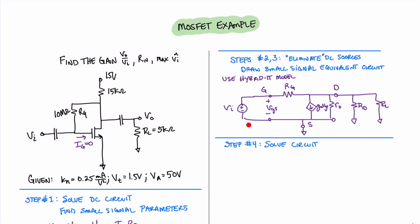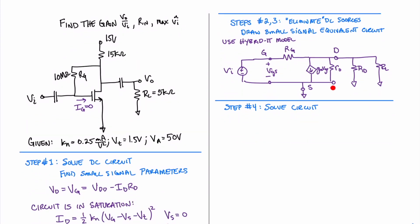Let's proceed to solving this circuit using circuit theory techniques. We start by recognizing that all three resistors — RO, RD, and RL — are all in parallel. We'll give that a name of RL prime to indicate an equivalent resistance. RL prime is RO in parallel with RD in parallel with RL. Plugging in our values and solving the parallel configuration, we find that equivalent resistance is 3.55 kilohms.